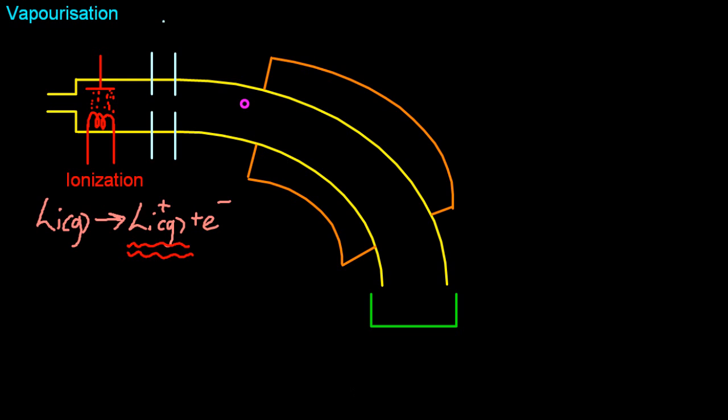The plates there have an electric field and that accelerates that positive ion through that part of the machine. Now the reason it has to be an ion is because you can't really accelerate an atom using an electric field. It has to be a charged particle.